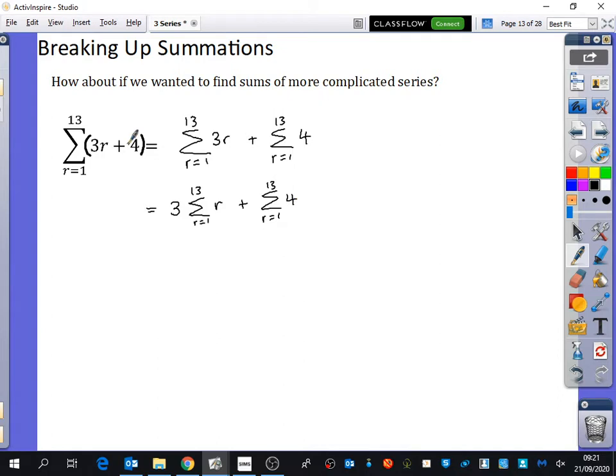We can take it like this and we can split it into 3 multiplied by R plus the sum of the extra constant bit that comes on at the end. And once we have it looking like this, it's going to be pretty straightforward about what we want to do here. So we would have 3 multiplied by, what would this part be? A half of 13 by 14, because that's a half n, n plus 1.